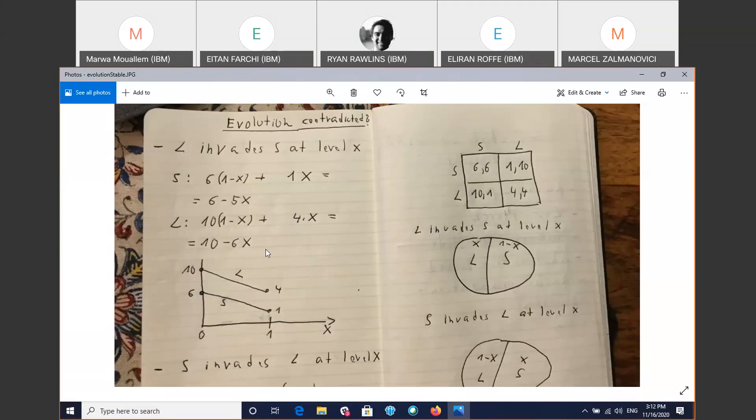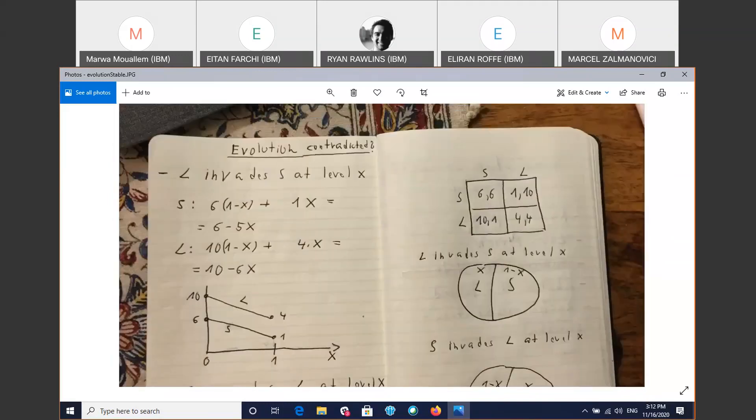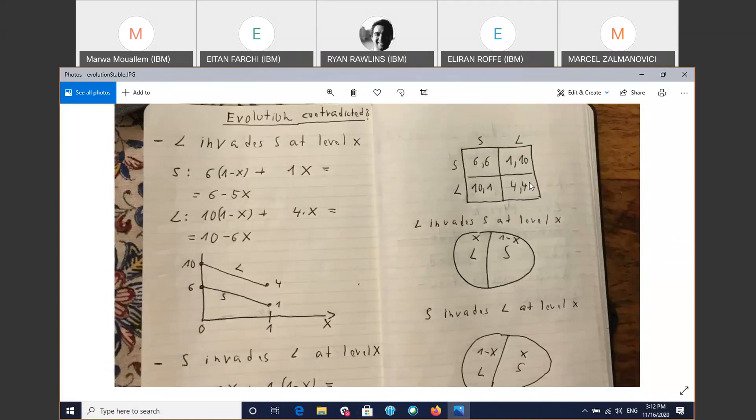So overall, we're going to say that S cannot block the invasion of L. So conceptually, L will grow bigger. And you know, L will be more fit. And as a result, the percentage of L is going to grow and grow and grow indefinitely until it becomes totally an L world. Okay. You know, as an exercise, you can try to see what happens if S invades L. You would see a similar result. So the end result here is that eventually the world is going to be 4, 4.